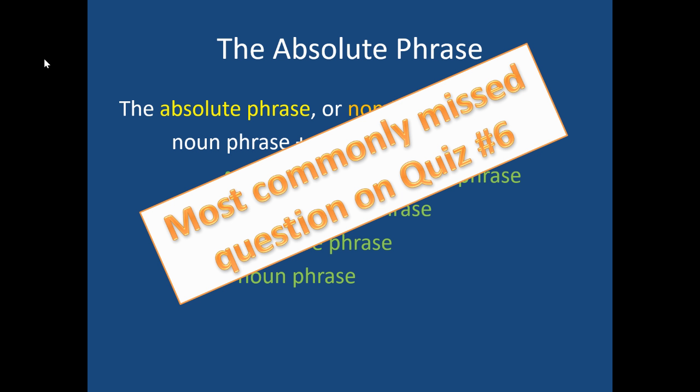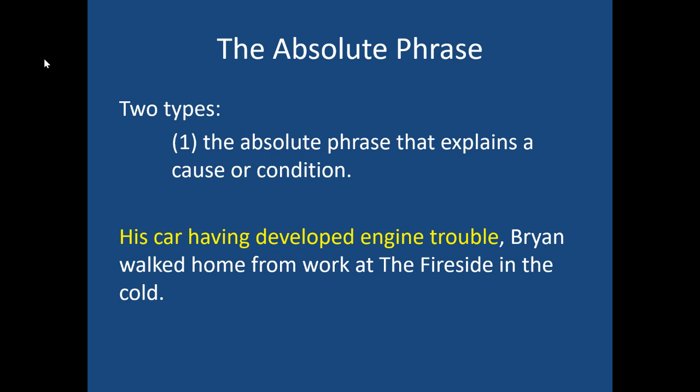This is the most commonly missed question on quiz number six, so let's make sure we understand exactly how to build an absolute phrase. There are two different types. Sometimes an absolute phrase explains the cause or condition of the rest of the sentence. Looking at 'Brian walked home from work in the cold,' you wonder why. The cause or condition is provided by the opening absolute phrase: 'his car having developed engine trouble,' which sets the tone or condition for the rest of the sentence.